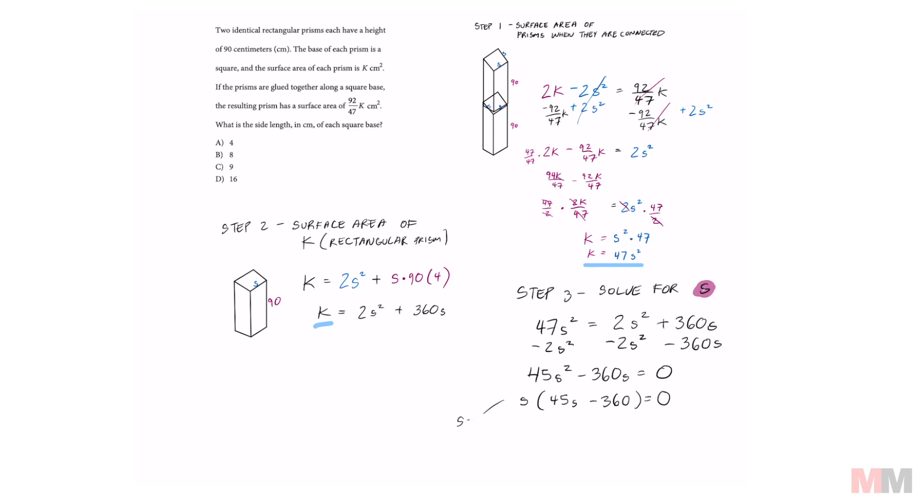So that means that S could equal zero, which cannot be one of the answer choices because you can't have a length of zero. Or we can take this expression and set that equal to zero and solve it. And that will get me S, which equals eight.